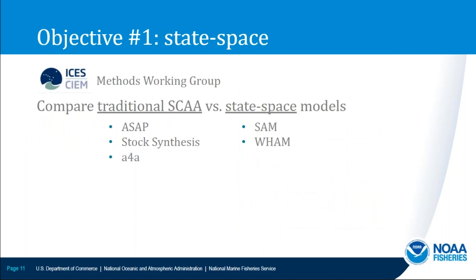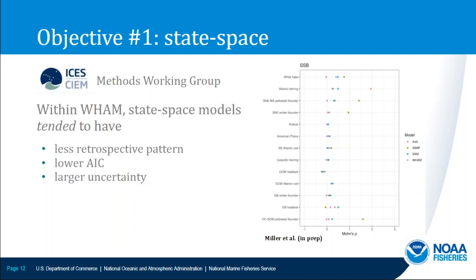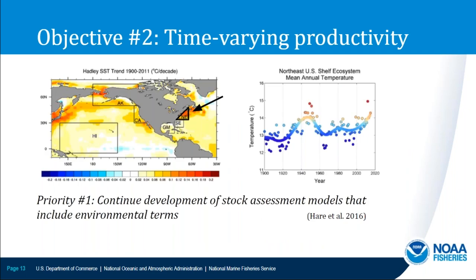One of the main objectives in the Northeast is to develop a state-based model, motivated partly by ICES working group analyses comparing traditional statistical catch-at-age models with state-based models. Across a number of stocks, state-based models tended to have less retrospective pattern, lower AIC, and larger uncertainty in biomass estimates. A second objective is to incorporate time-varying productivity, because the Northeast region has been rapidly warming — more so than the global average — particularly in the last 20 years.